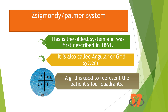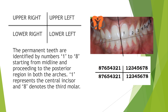The Zsygmondy-Palmer system is the oldest system and was first described in 1861. It is also called the angular or grid system because it used a grid to represent the patient's four quadrants. You can see it here — this is the upper right, upper left, lower right, and lower left.